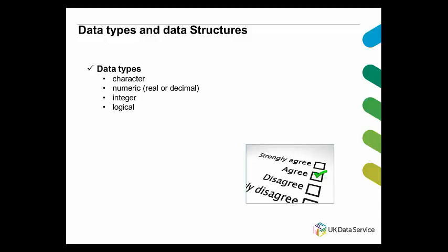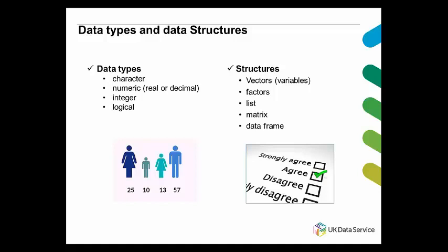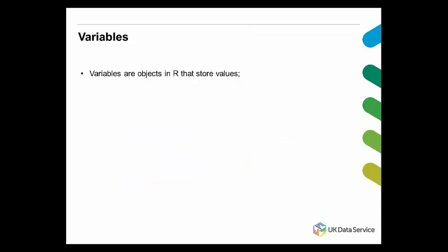In data structures, we have vectors — which I said are just variables — factors, lists, matrices, and data frames. Factors are the equivalent of, for instance, when you put a label to the variable sex: number one is for female, number two is for male. That's a factor variable in R. Variables are objects in R that store values — for instance, when we assign the value three to the letter A, it becomes a variable, the variable A.